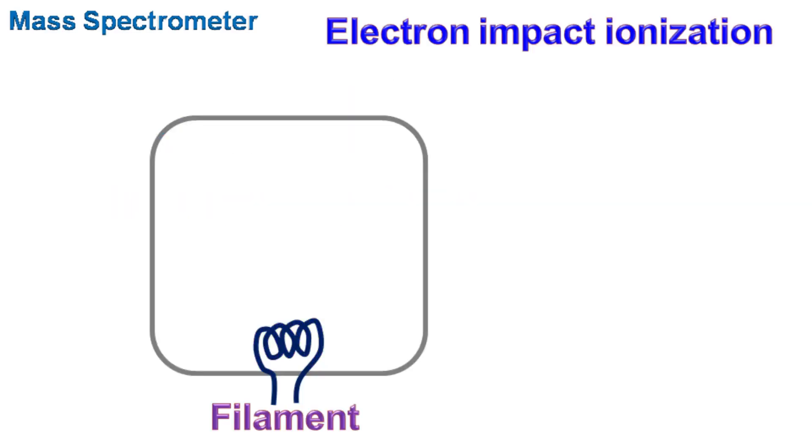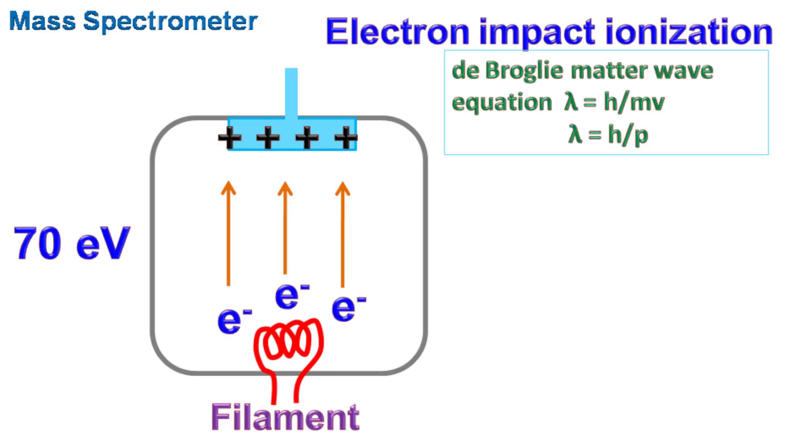Electron impact ionization: In this method, a stream of electrons is generated using a heated metal filament. The other end of the chamber has a positively charged electrode that accelerates the electrons. The energy of accelerated electrons is usually at 70 electron volts. Now the energy of 70 electron volts is very important according to de Broglie matter wave equation. Wavelength of particle is given as λ = h/mv.